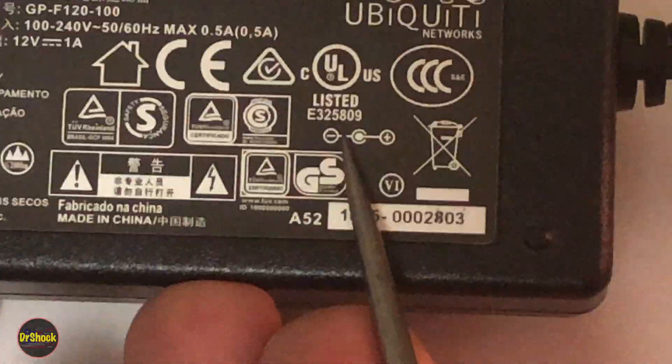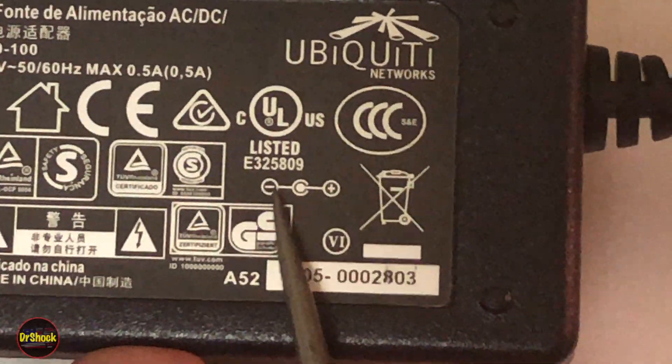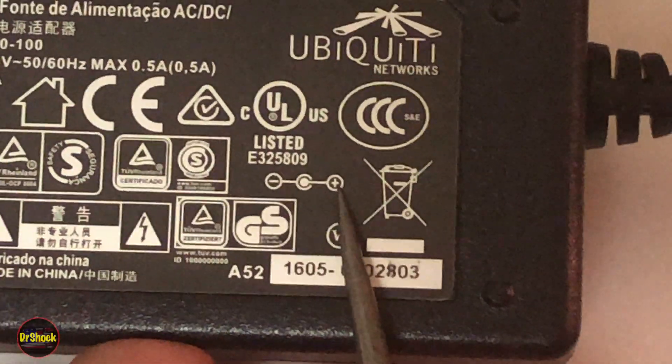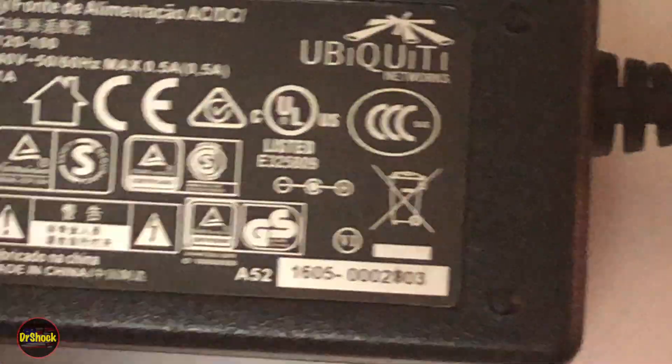The other thing is you'll find on these power supplies, and in this case it's right down here, this is the polarity of the plug. So what this is telling you is that the outer shell of the plug is negative and the center pin is positive. So that's something else you need to know in order to locate a replacement. Now if we take a look at the plug itself, let's zoom back out here a little bit.